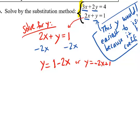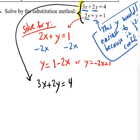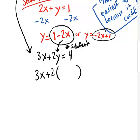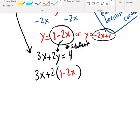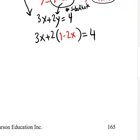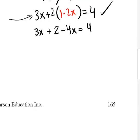Now I grab the equation we haven't touched yet: 3x plus 2y equals 4. Where the y was, I substitute 1 minus 2x. So it becomes 3x plus 2 times (1 minus 2x) equals 4. Check that you only have one variable — yes, only x. Distributing the 2 gives 3x plus 2 minus 4x equals 4. Combining like terms: negative x plus 2 equals 4.